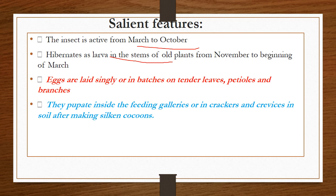Some important features: the insect is active from March to October and hibernates — undergoes dormancy during the larval stage inside the stem of old plants from November to March. Eggs are laid singly or in batches on tender leaves, petioles, or branches. The larvae pupate inside feeding galleries or in cracks and crevices in soil after making a silken cover.